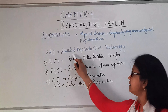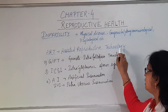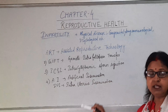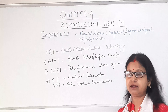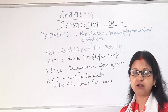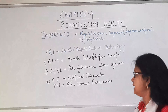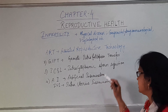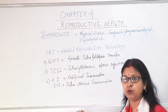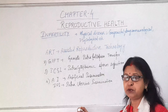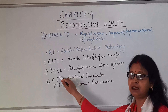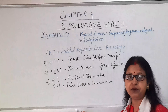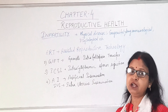The third type of ART is ICSI, that is Intracytoplasmic Sperm Injection. This is used when the male has low sperm count or cannot inseminate properly. In such cases, the sperm is taken from the male or donors and directly injected into the ovum in laboratory conditions. The resulting zygote is then introduced into the mother's body for further development.